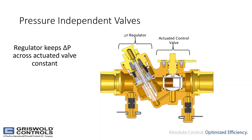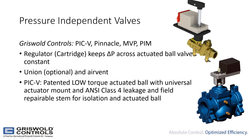Question from the chat: does the manual override handle come with the actuator or with the bare valve? The handle comes with the actual valve that Griswold sells — the black handle sits on top of the stem where the actuator mounts.